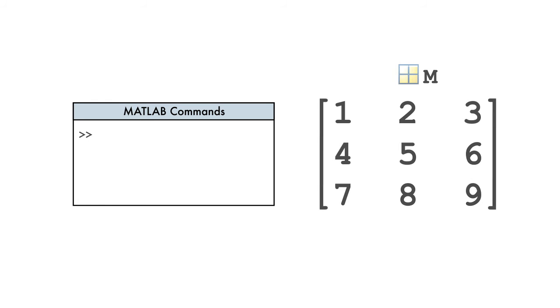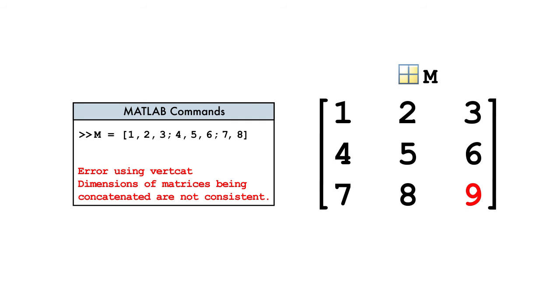When typing in numbers by hand, it's easy to make a mistake and accidentally put too many or too few elements in a row of the matrix. This results in a concatenation error message.